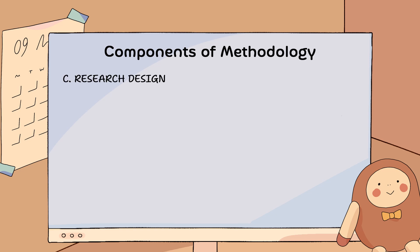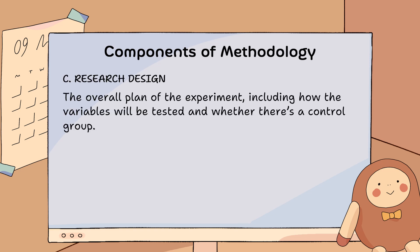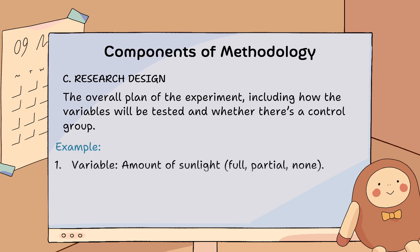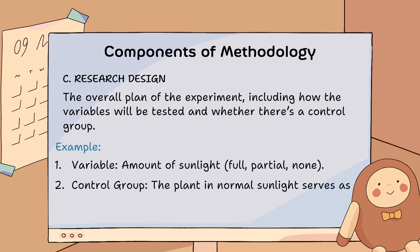Research design is the overall plan of the experiment, including how the variables will be tested and whether there's a control group. For example, the variable is the amount of sunlight — full, partial, or none. The control group is the plant in normal sunlight, which serves as the control to compare against other conditions.